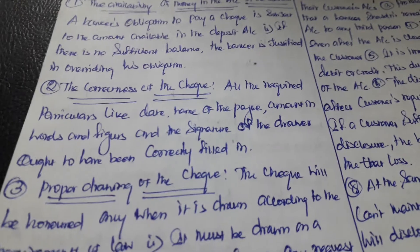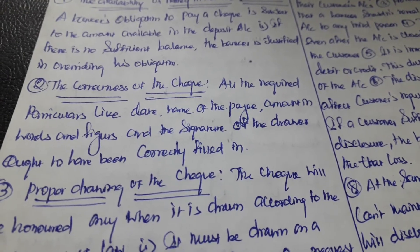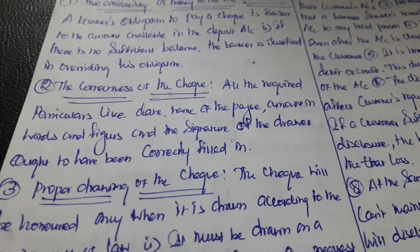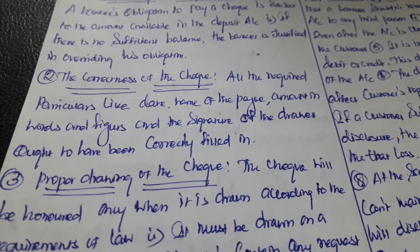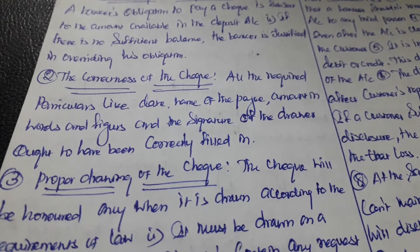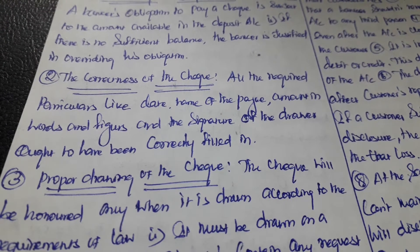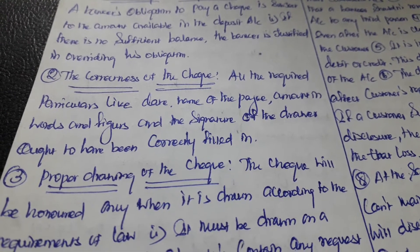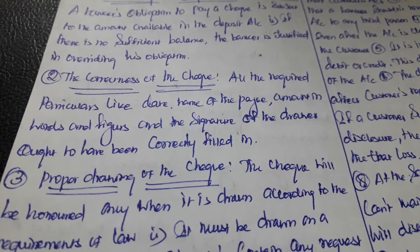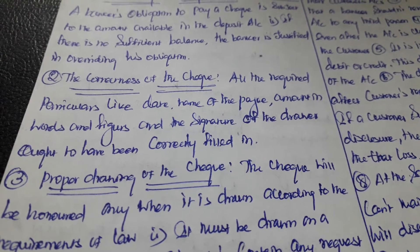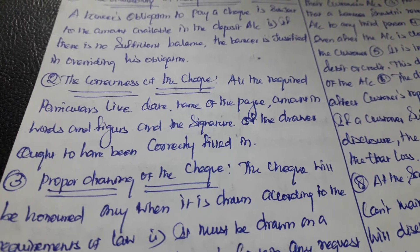The second obligation is the correctness of the check. All required particulars — like date, name of the payee, amount in words and figures — should be present, and the signature of the drawer ought to have been correctly filled in.